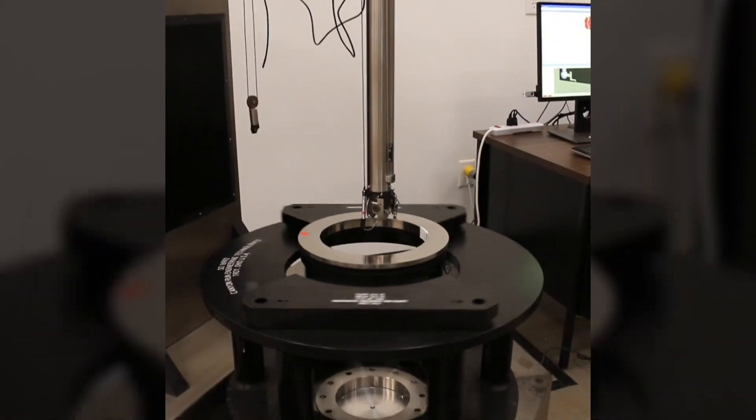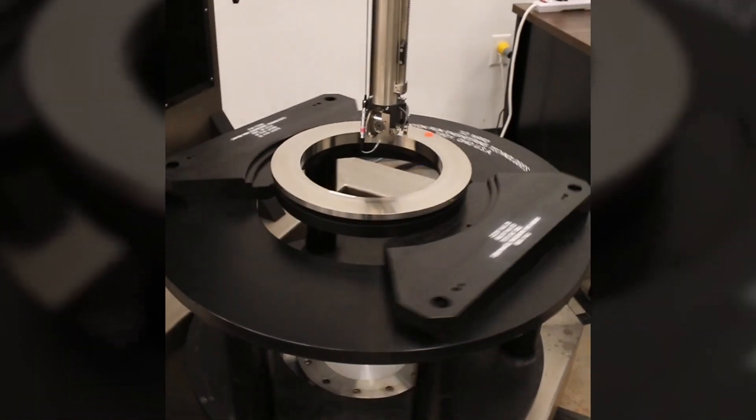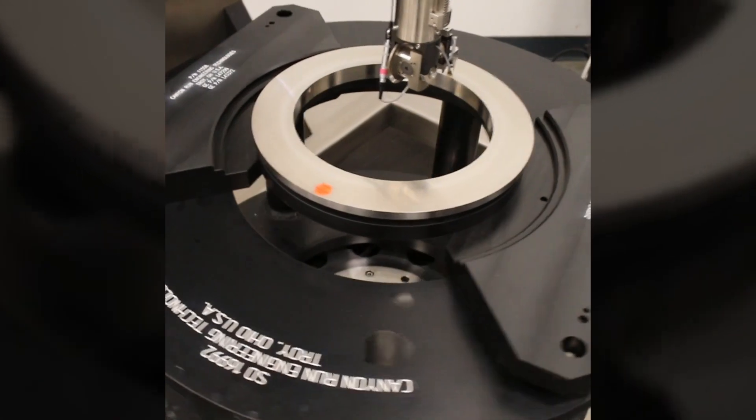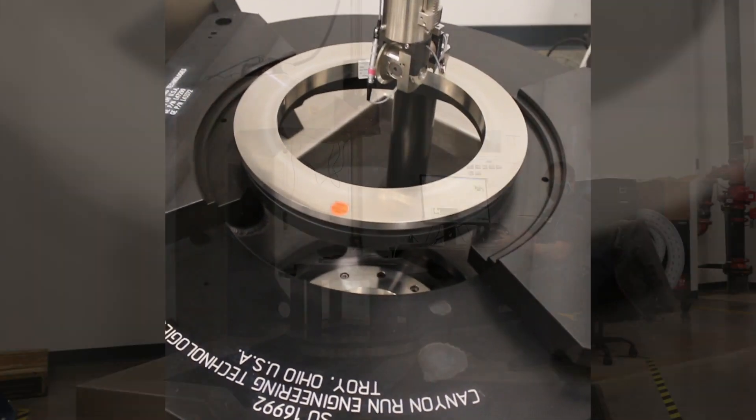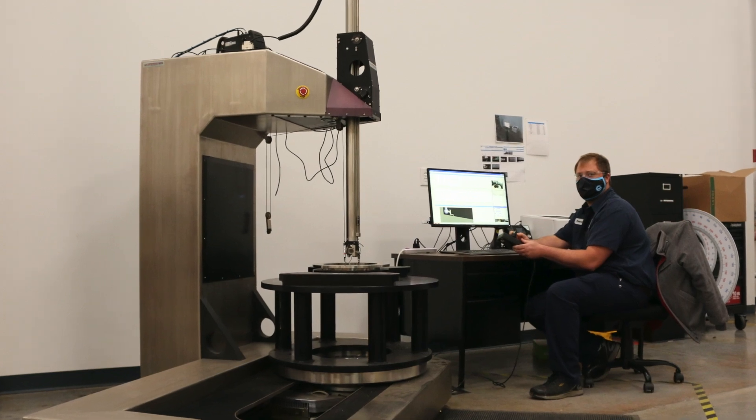Eddy Current Inspection is an electromagnetic method of inspection using a magnetic field coupled to the part. Its greatest strength is it is extremely sensitive at detecting surface breaking discontinuities. However, it is limited in ability to penetrate deeply into materials.